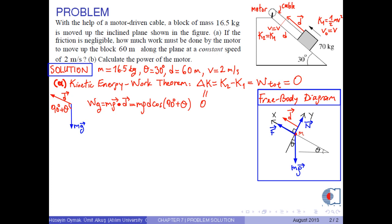If we insert the numerical values into this equation, we obtain the work done by the gravitational force as negative 4.851 joules, or approximately negative 4.85 joules in three significant figures.